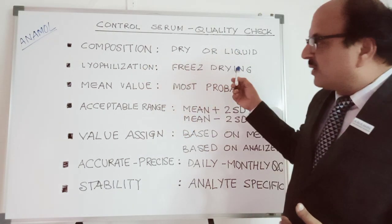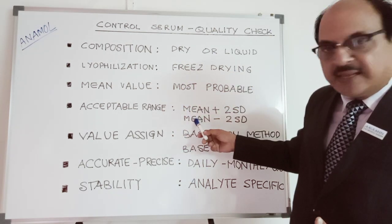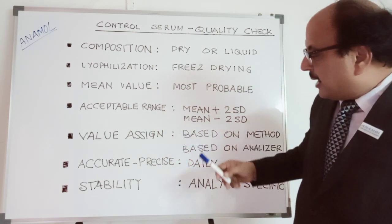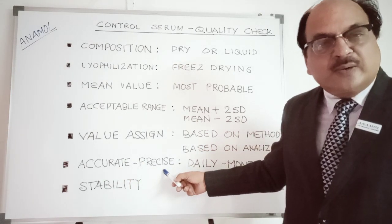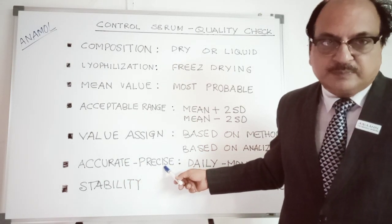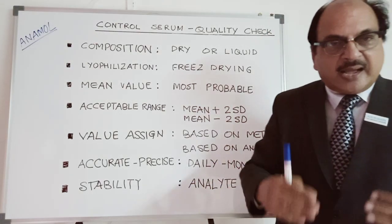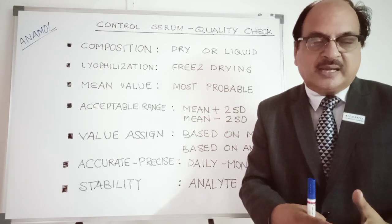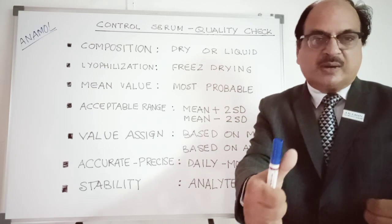I hope I've been able to explain the composition and types of control serum, the process of lyophilization or freeze drying, what is mean value and acceptable range, how values are assigned, and how to ensure your results are accurate on a daily basis — precision — and the stability of a control serum. I hope this has been a useful video. If you like it, please subscribe and press the bell icon to keep getting more videos like this. Thank you very much, friends.